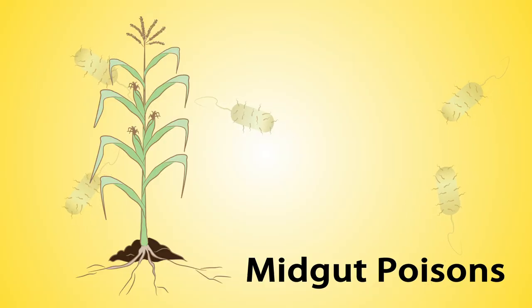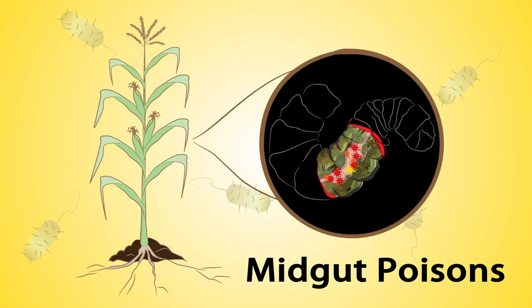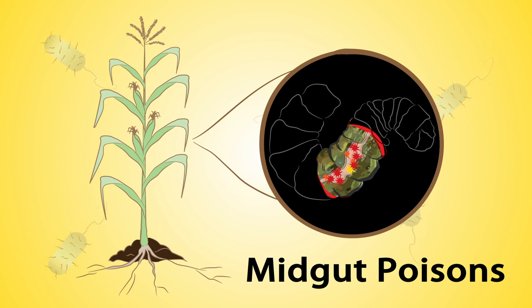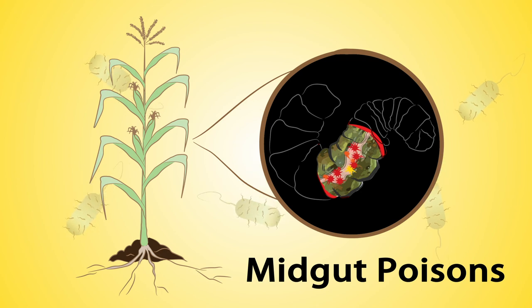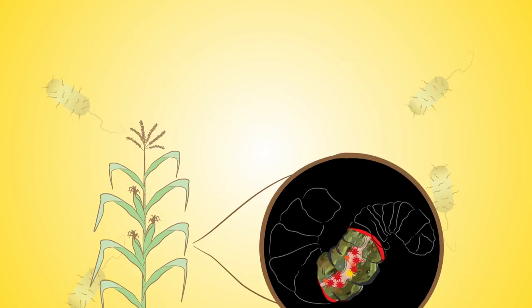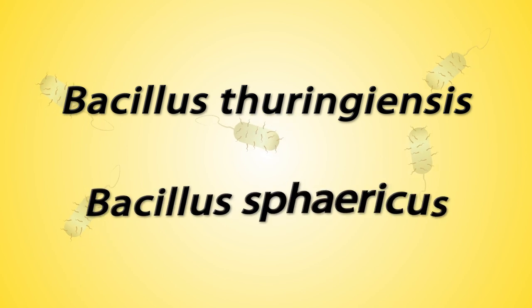Mid-gut poisons are poisons that attack the guts of insects via protein toxins, leading to unbalanced ions or salts and other minerals, and septicemia or blood poisoning. Examples include BT toxins such as Bacillus thuringiensis and Bacillus varicus.